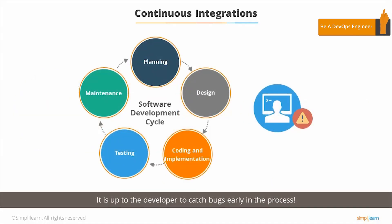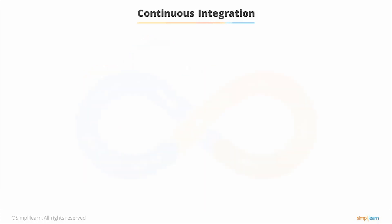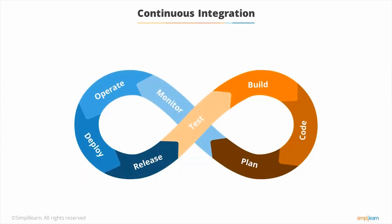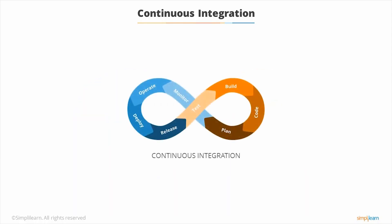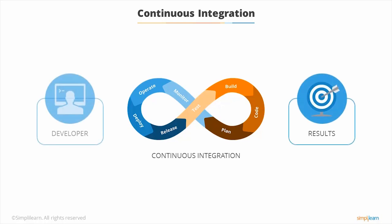Another problem is that it is up to the developer to catch bugs early in the process. If a developer happens to be having a bad day, bugs can be introduced into the project without anyone to catch them. The goal of continuous integration is to automate every step of the software development cycle, allowing faster, more frequent, and much better quality software delivery. CI allows developers to focus on the project by letting automation handle the phases of the development cycle, which means less distractions, better results, and happier developers.